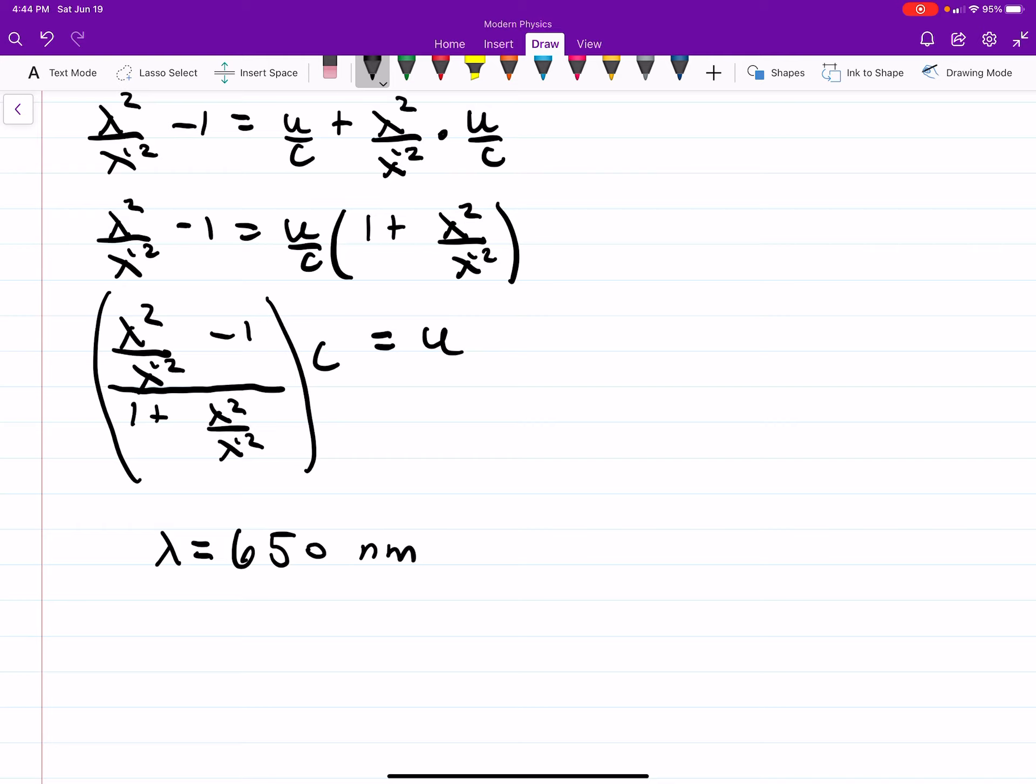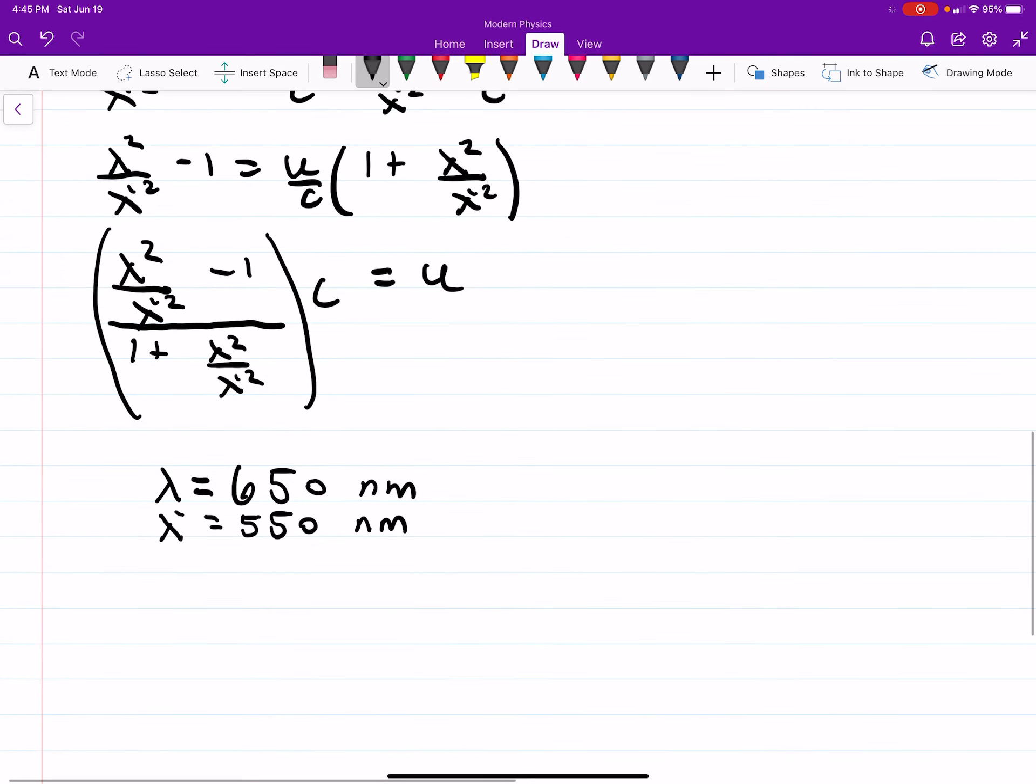And I'm not going to convert this to meters. It's not necessary. When you plug these in, you're going to have nanometers squared over nanometers squared, so the units are going to drop. So I'm just going to leave them in nanometers. In lambda prime, that's the claimed wavelength that was observed from our reference frame, so 550. And if you plug all this in, you get u equals 0.166c.